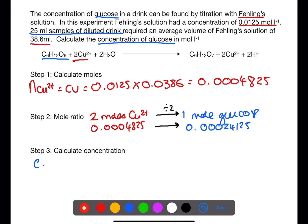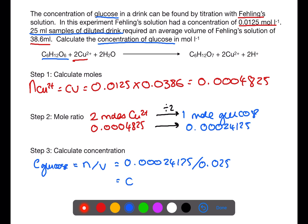The final step is to take the number of moles of glucose that you've just calculated and divide it by the volume of the glucose solution that we've used. Remember to turn the volume into litres by dividing by 1000 first. This will then give you the concentration of glucose in the solution.